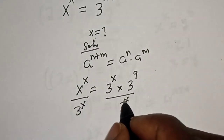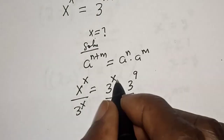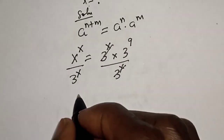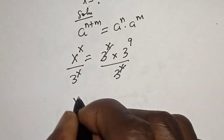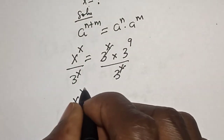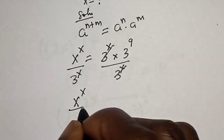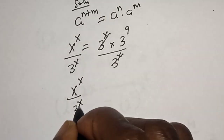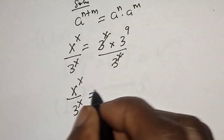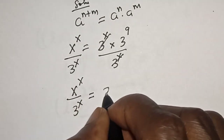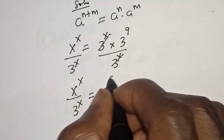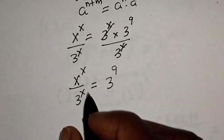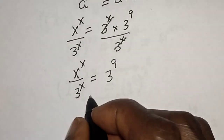This one will cancel this. We have s to the power of s divided by 3 to the power of s is equal to 3 to the power of 9.